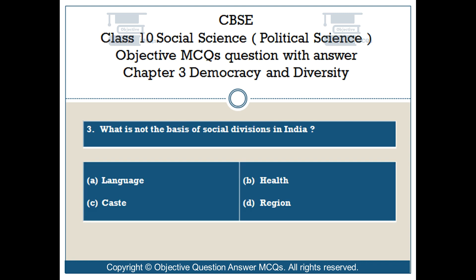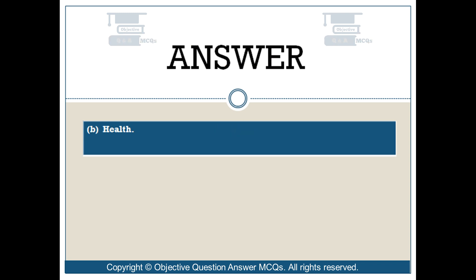Question number 3. What is not the basis of social divisions in India? Option A: Language. Option B: Health. Option C: Caste. Option D: Region. The right answer is Option B — Health.